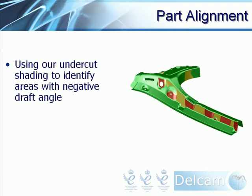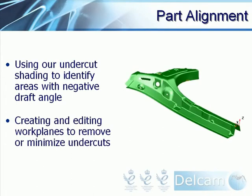First of all, we will be looking at part alignment. We will be using PowerShape's undercut shading to identify areas with a negative draft angle. We will then be creating and editing workplanes to remove or minimize the undercuts and correctly align the part.